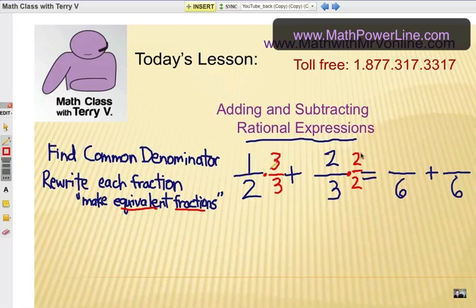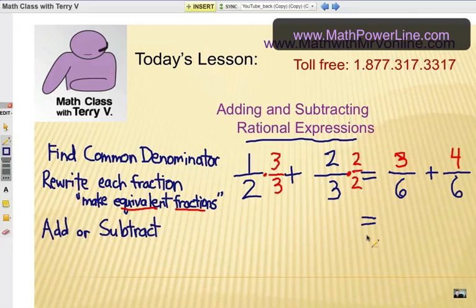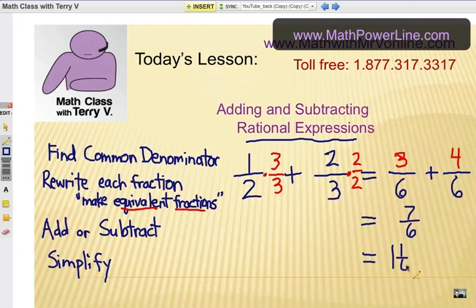So, in this case, 1 times 3 is 3. So, we have another name for 1 half is 3 sixths, and 2 times 2 is 4, so that would be 4 sixths, another name for 2 thirds. Alright, next step. Now, we're going to either add or subtract, and, of course, that would give us 7 over 6. And the last step is to simplify what we've got. Now, in this case, we'd get a mixed number 1 and 1 sixths.